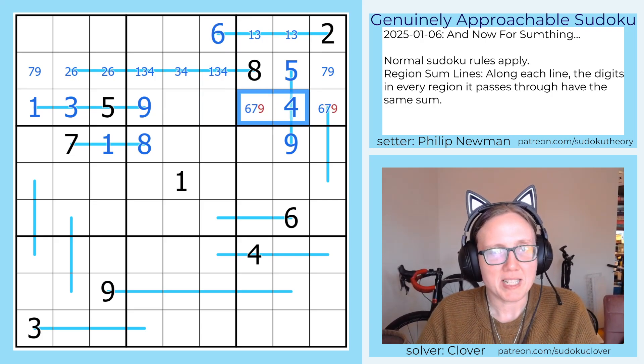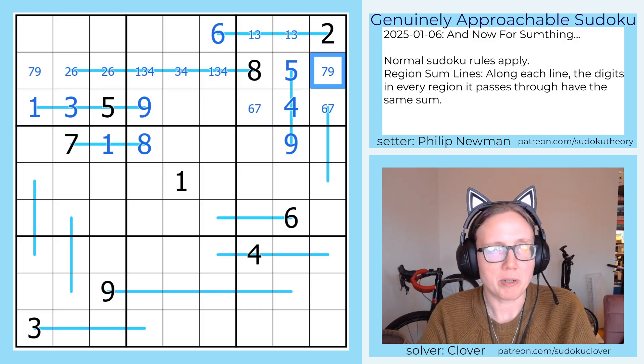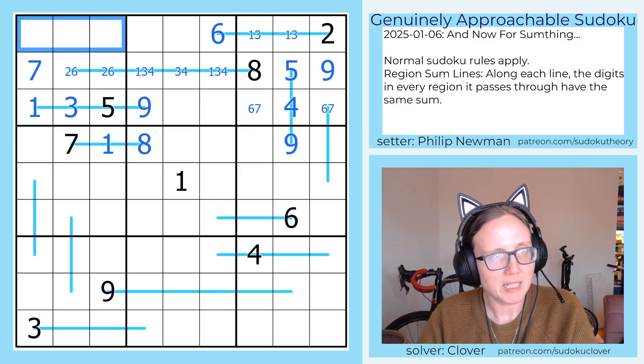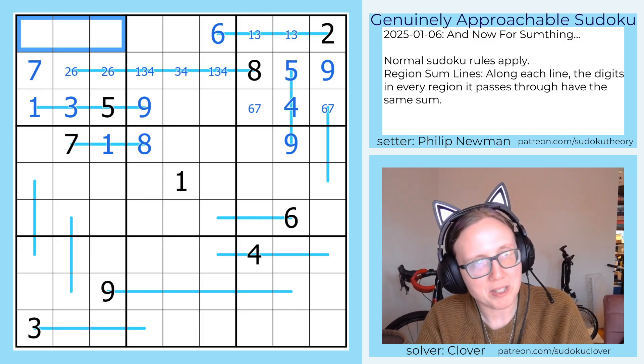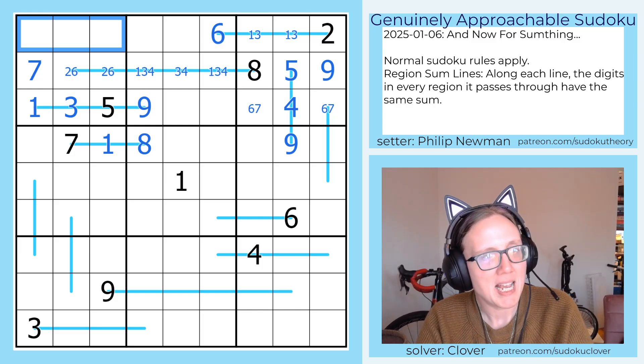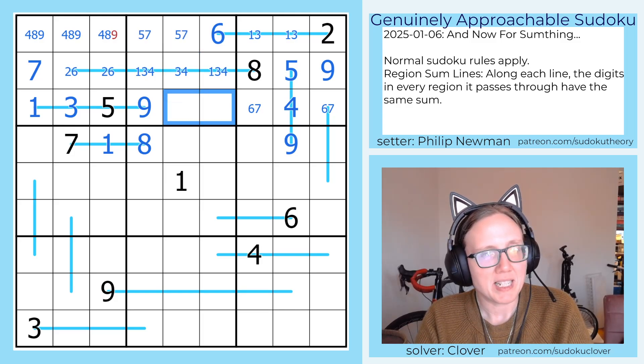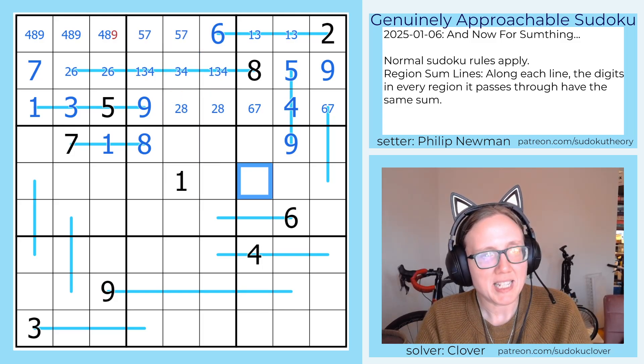These are going to be 6, 7, and 9. And then there's a 9 in that row already, so that makes this a 9, and places a 7. Of course we can fill in, just with pencil marks, our last couple of digits here. These guys are going to be 4, 8, and 9. These will be 5 and 7, and these will be 2 and 8.